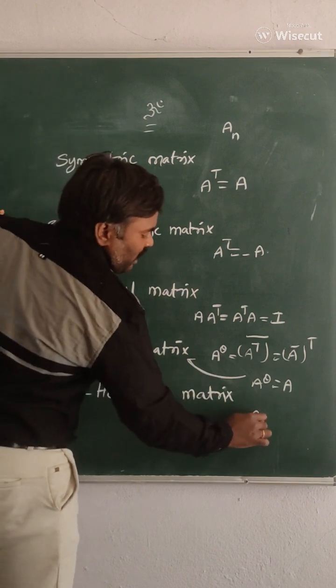If A power theta is equal to minus A, then you can say skew Hermitian matrix.